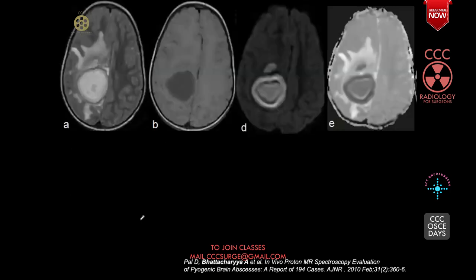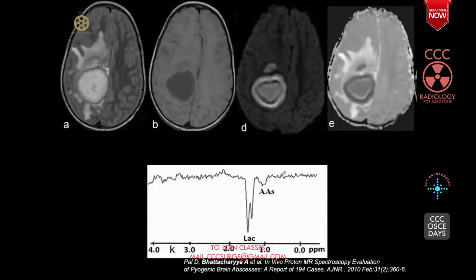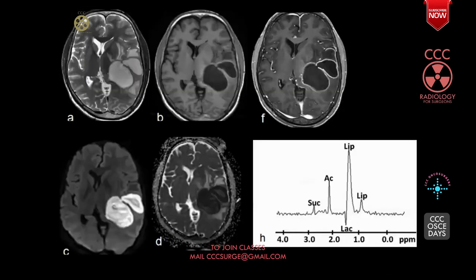Repeating the previous case: T2 hyperintense lesion, dark on T1, bright on diffusion, and on MR spectroscopy only a lactate peak is seen — again, this is a brain abscess. This abscess was drained and it grew Pseudomonas aeruginosa.